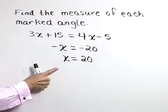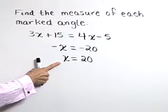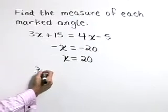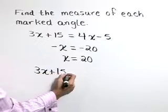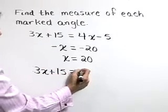Now, we're not done yet. We want to find the measure of each marked angle. We're given one angle as 3x plus 15, substituting x equals 20.